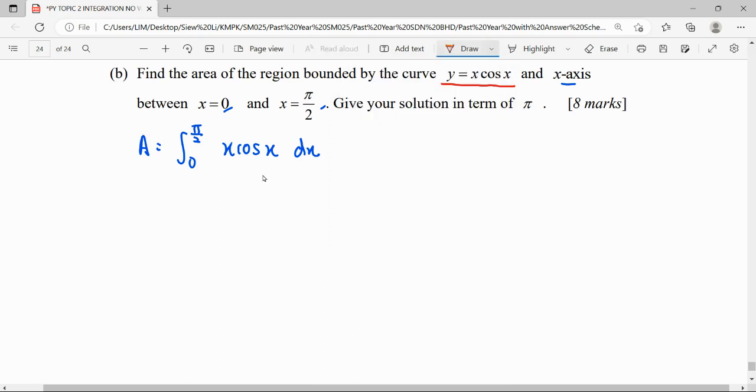For integration by parts, the formula is ∫u dv = uv - ∫v du. We have to select our u following the LIATE path: logarithmic, polynomial, exponential, then trigonometric. So we select u as x (polynomial), and therefore the rest, which is cos x dx, will be our dv.